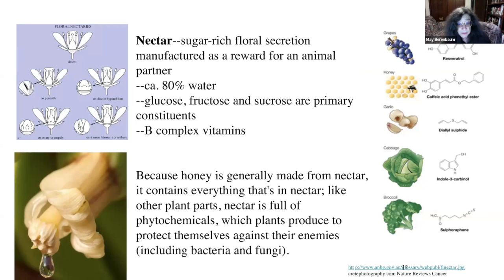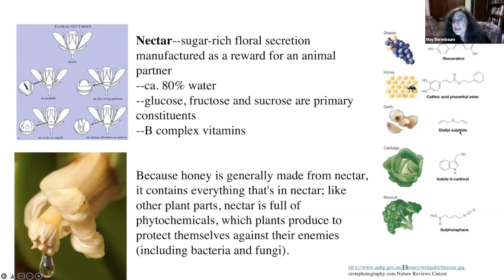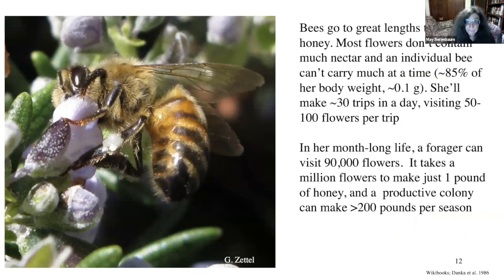Some familiar examples of plant phytochemicals: grapes have many with therapeutic or nutraceutical value. Alliums like garlic and onions have sulfide compounds; cabbages and broccoli have sulfur-containing sulforaphane and nitrogen-containing indole-3-carbinol. Most plant families have characteristic secondary chemistry.